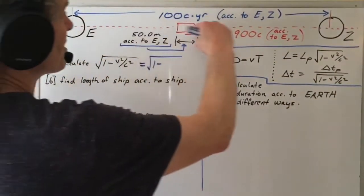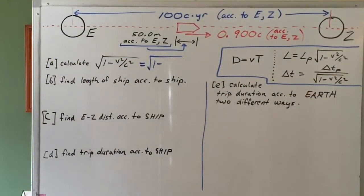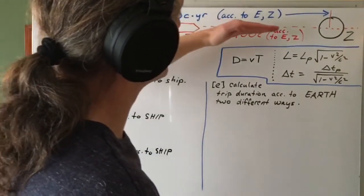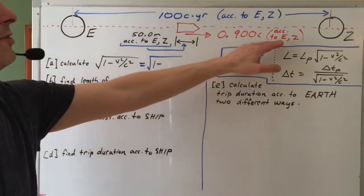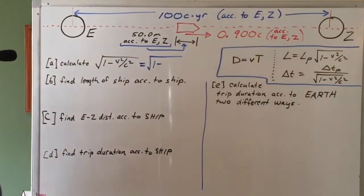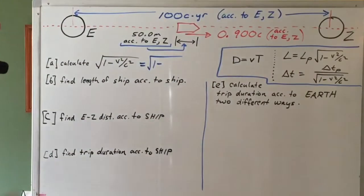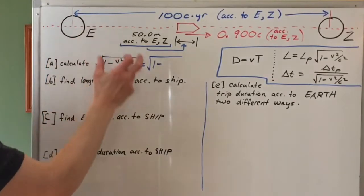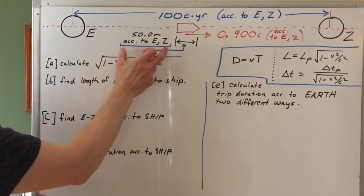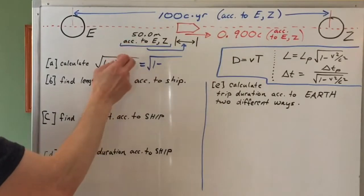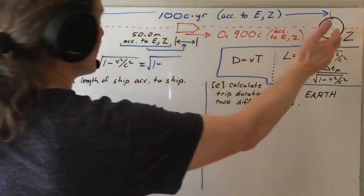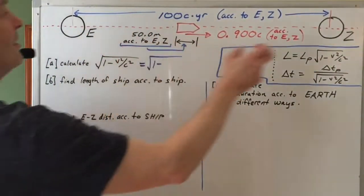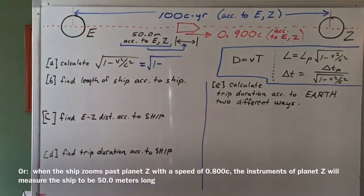This dotted line represents the path of a spaceship zooming from the left of Earth, zooming past the Earth, and heading toward planet Z with a speed relative to Earth and planet Z of 0.900C. Let's imagine that speed is constant. And as the spaceship passes Earth, the people on Earth measure the length of it using precise instruments, and they measure the length of the spaceship to be 50 meters.